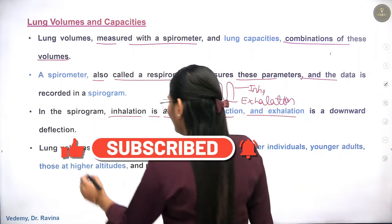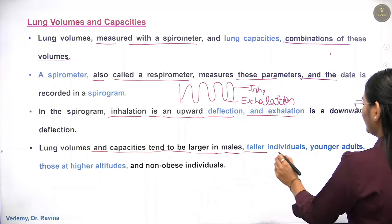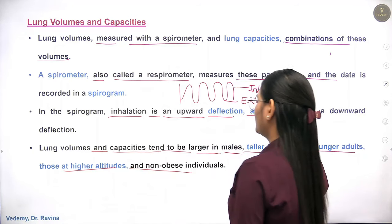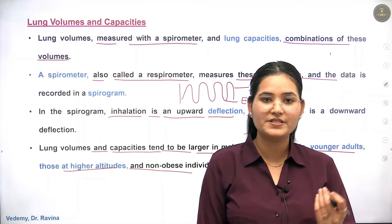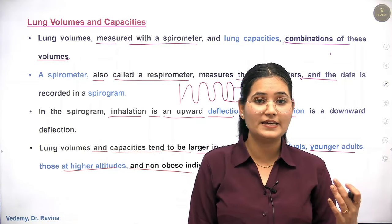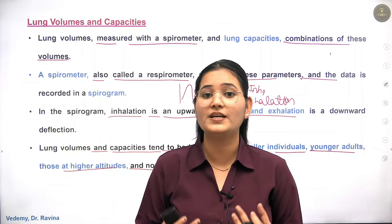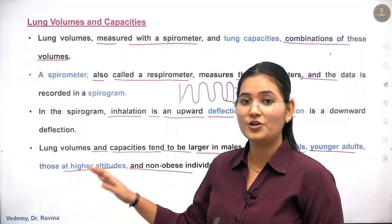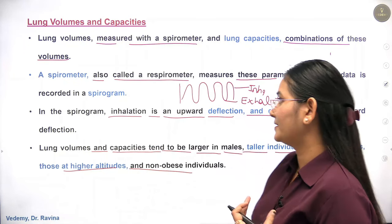Lung volume and capacity tend to be larger in males, taller individuals, younger adults, those at higher altitude, and non-obese individuals. If you compare males and females, males have a broader chest area and shoulders. If you do more exercise, your lung volume and capacity increases. It varies from person to person.